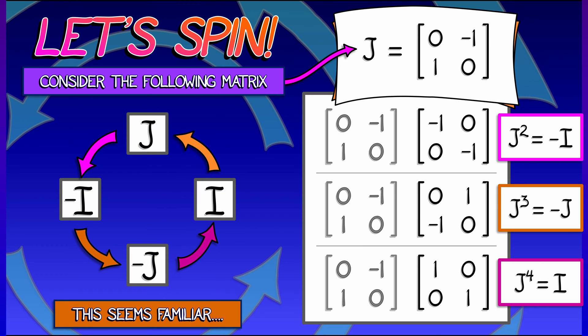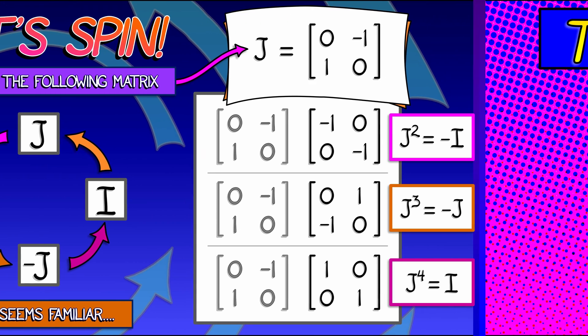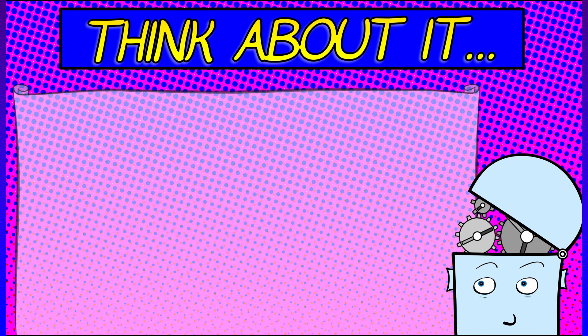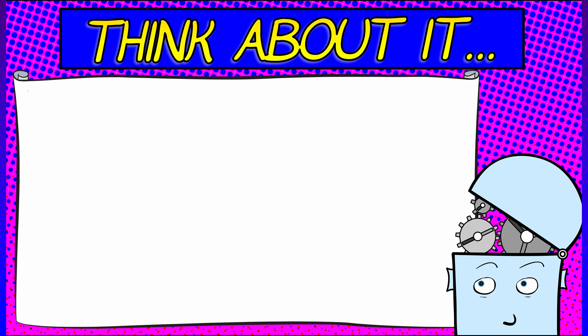Now, what's interesting about this is that you've seen this pattern before. If you think about it, the idea that J squared equals minus I and the identity matrix is kind of like the number 1 in matrix algebra, then you can say that J is like the square root of minus I. J is like the matrix version of the square root of negative 1, that is the complex number I.